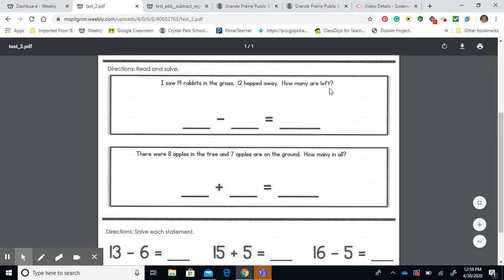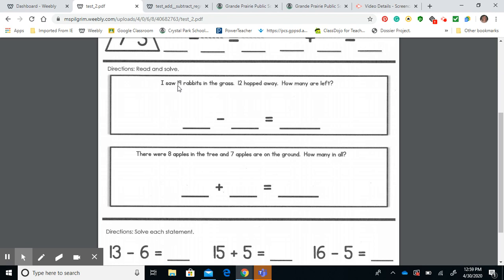So how many do you have left over? 19 rabbits in the grass, they're playing in the grass, trying to steal the farmer's carrots. 12 hopped away. How many are left?